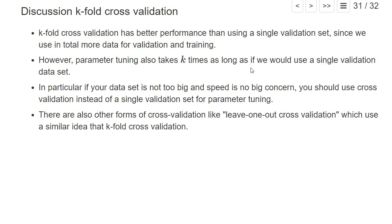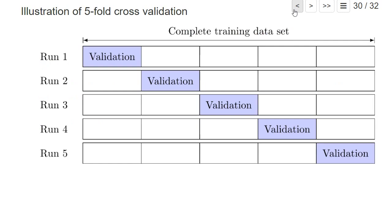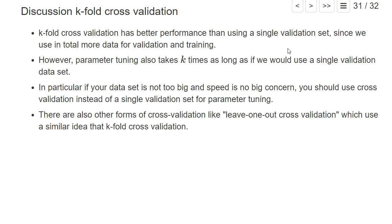In principle, k-fold cross validation always has better performance in the sense of providing a more precise assessment of the out-of-sample accuracy for a particular hyperparameter combination than using a single validation data set. In total, we essentially use more data for both training and validation — we use each of the five data sets for validation — and there's always some randomness depending on which validation set we use. In this sense it's superior to splitting into a single validation and one remaining training set.